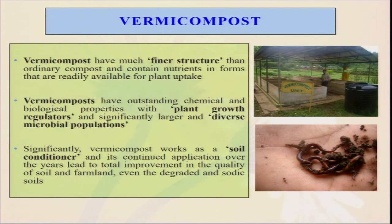Vermicompost works as a soil conditioner, and its continued application over years leads to total improvement in the quality of soil and farmland, even degraded and sodic soils. In organic farming it is always advisable to use vermicompost, because you cannot use inorganic fertilizer. Purchasing compost from the market will be too costly and not sustainable. But if you can produce vermicompost in your own farm, it will save money and ensure the quality of your crop produce. Earthworms available in nature can be purchased one time from any good source and then multiplied, and you can also do a business by selling earthworms as they are very much preferred for vermicomposting cultures.